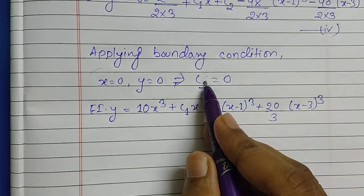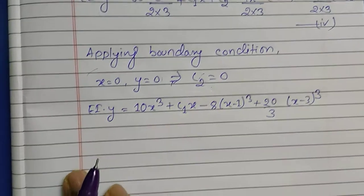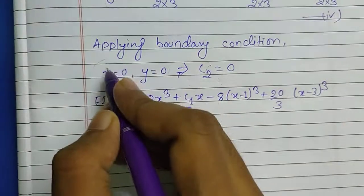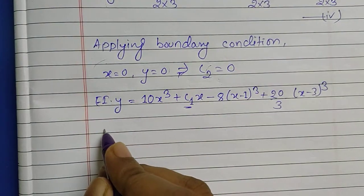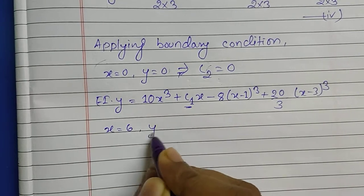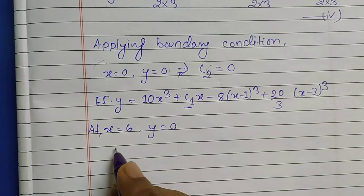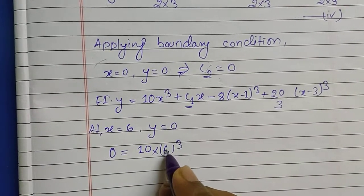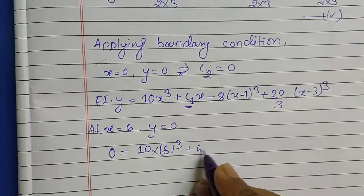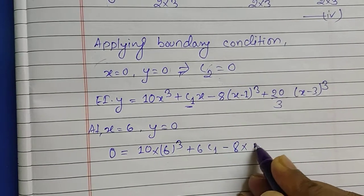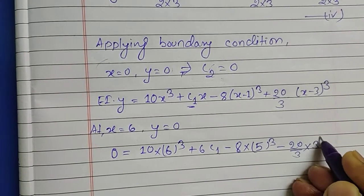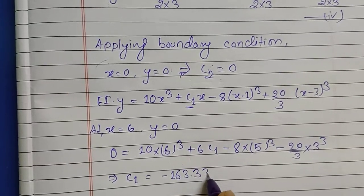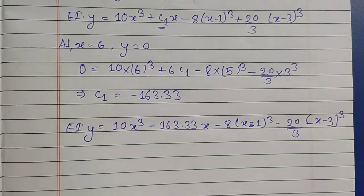Now applying the second boundary condition: x equals 6, y equals 0. Substituting into the simplified Equation 4: 0 equals 10 times 6 cubed, plus 6·C1, minus 8 times 5 cubed, minus (20/3) times 3 cubed. Solving this equation, we get C1 equals minus 163.33. We are asked to find deflections at points C and D.